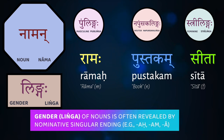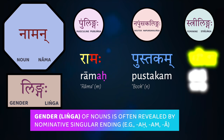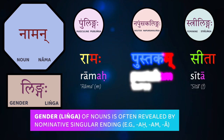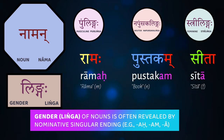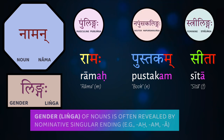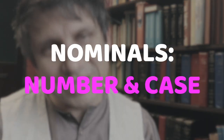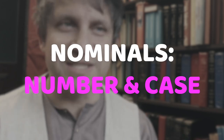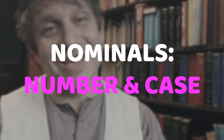To help us remember the connection between gender and nouns, we'll generally learn words in the nominative singular form, which gives away the gender. So 'ramaha' is masculine, 'sita' is feminine, 'pustakam' is neuter — these endings 'aha,' 'a,' and 'am' help us remember masculine, neuter, and feminine. Now let's turn to two other dimensions of nouns and adjectives: number and case.